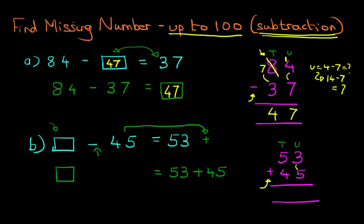As always, we start on the right-hand side. 3 plus 5, 3 plus 5 is 8. The tens column, we've got 5 plus 4. 5 plus 4 is 9. And that is the answer, 98. We can write this in the original question. 98 minus 45 equals 53. The missing number was 98.